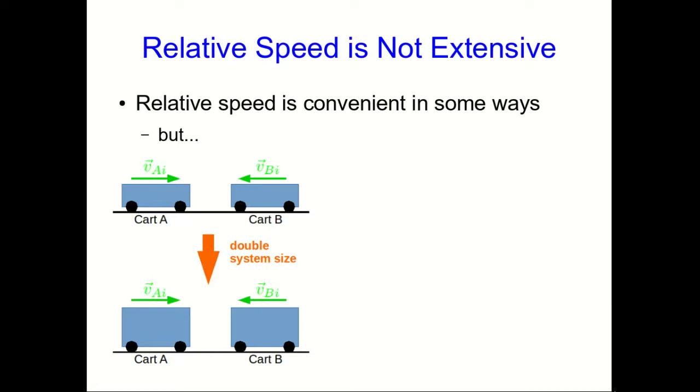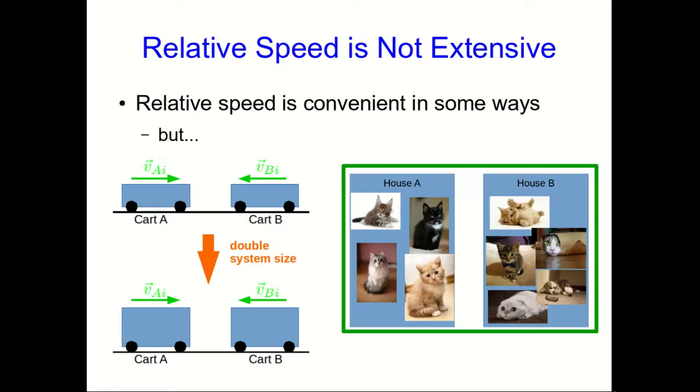And we like extensive quantities. They're convenient, they've got all those nice properties, that nice accounting system. And besides, you know that every time I talk about extensive quantities you're going to get to look at cute cat pictures, and who doesn't want to do that?